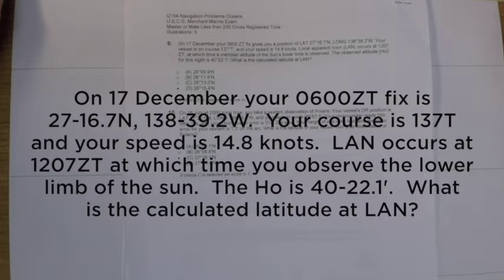Local apparent noon occurs at 1207, at which time a meridian altitude of the Sun's lower limb is observed. The observed altitude is 40 degrees, 22.1 minutes. What is the calculated latitude at LAN?